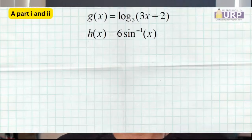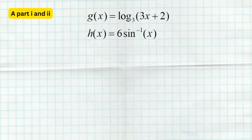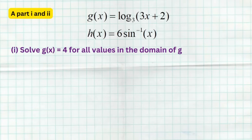Let's take a look at several examples of exactly the types of functions I'm talking about and how you're going to solve them for this fourth and final FRQ. This is similar to what Section A is going to look like. You're given two functions, and in each part you're asked to do some solving. In part one, we're asked to solve the first function g(x) = log base 3 of (3x + 2) equals 4 for all values of the domain of g.